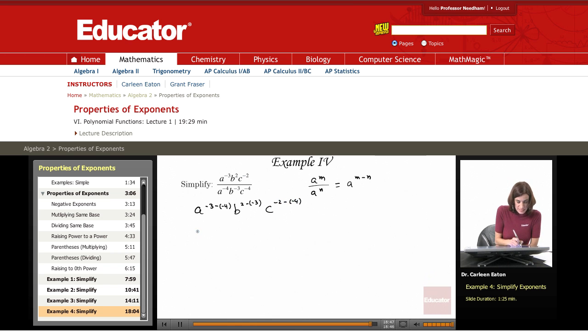This is negative 3. Negative and negative actually gives me plus 4. And this is 2 minus negative 3, so that is plus 3. And then negative 2 minus negative 4 is plus 2.